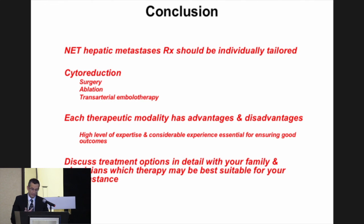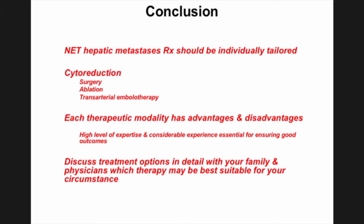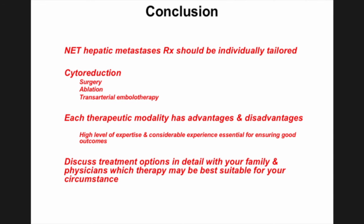In conclusion, neuroendocrine metastasis treatment should be individually tailored and interpreted within a multidisciplinary group. Every patient is different, and more research is needed to clarify which procedure is best for which type of disease. Cytoreductive therapy is important, and each modality has advantages and disadvantages. It is important to go to a high-volume center with expertise — patients have gone seven or eight years being wrongly diagnosed outside of expert centers. Discuss treatment options in detail with your family and physicians to determine which therapy is best for your circumstance.